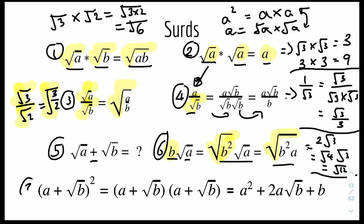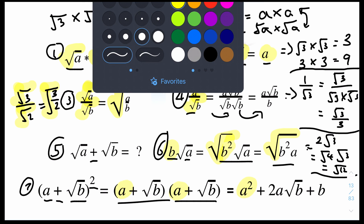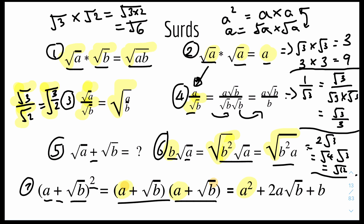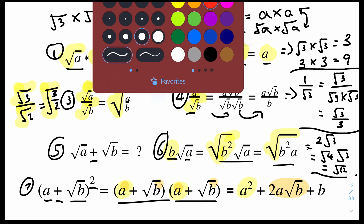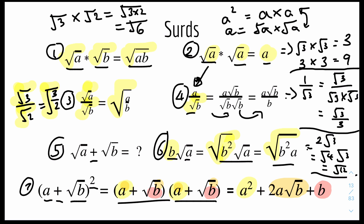Rule number 7, lastly, is expanding the bracket for a surd and a non-surd with a constant: (A + root B) squared. When you expand the bracket, A times A gives A squared; A times root B plus root B times A gives 2A root B; and root B times root B equals B by rule 2. This is useful when you need to expand brackets quickly in exam questions.